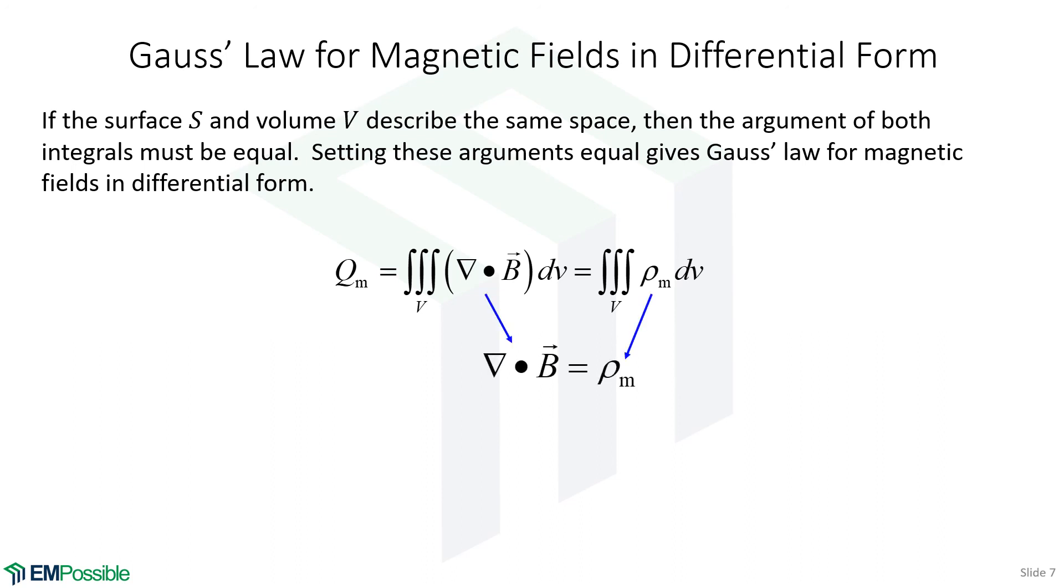Now, since there is no such thing as magnetic charge density, we would set this term to zero, and we would arrive at Gauss's law for magnetic fields in differential form. The divergence of the field is always zero.